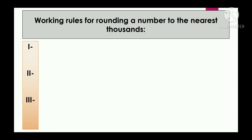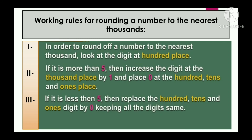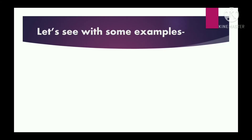Here are the working rules for rounding a number to the nearest thousand. Step one: look at the digit at the hundreds place. Step two: if the hundreds digit is more than 5, increase the thousands digit by one and place zero at hundreds, tens, and ones place. Step three: if the hundreds digit is less than 5, replace the hundreds, tens, and ones digits by zero, keeping all other digits the same.